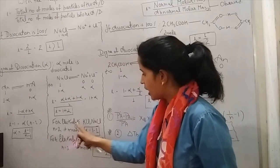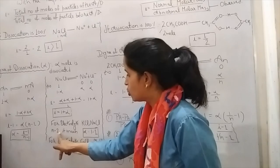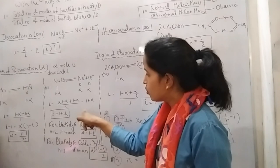For electrolytes like KCl and NaCl, N = 2. If we put N = 2, we get α = i − 1. This is proved here.